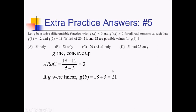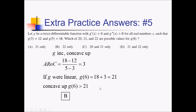Since g is known to be concave up, that means our rate of change is increasing. So we must be growing more than at a linear rate, meaning g of 6 has to be bigger than the linear result — bigger than 21. Out of the three possibilities, the only one that's bigger than 21 is 22. So only 22, choice B, is a good answer here.